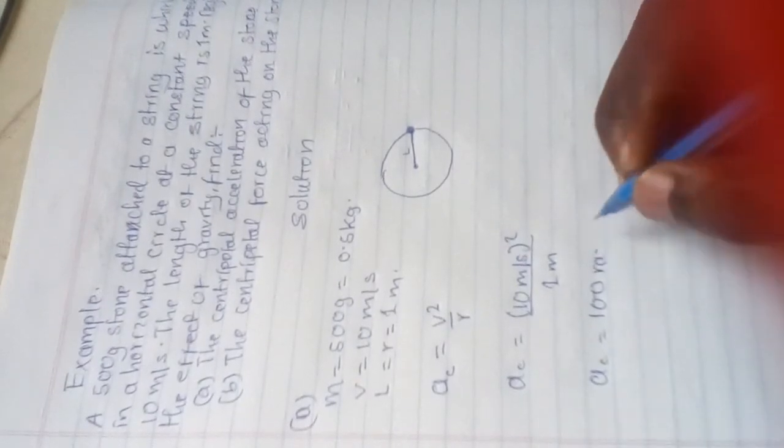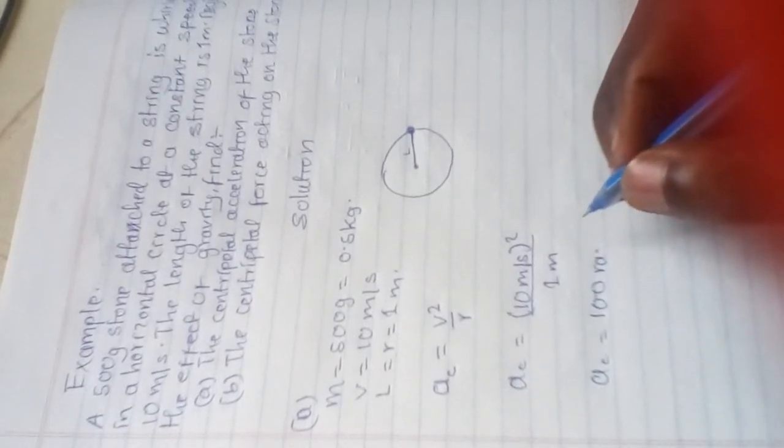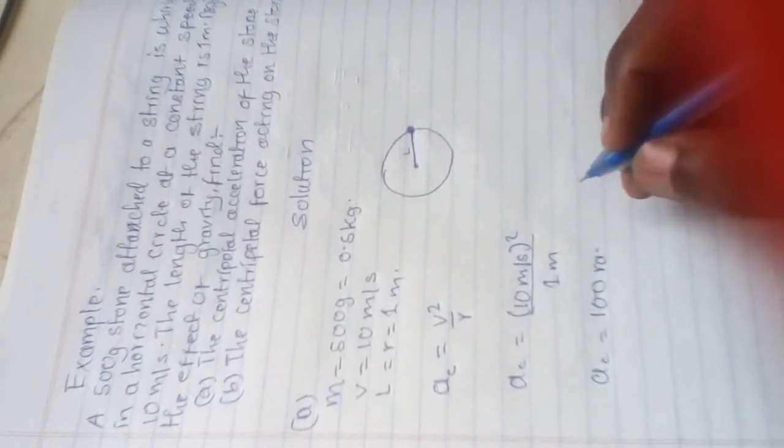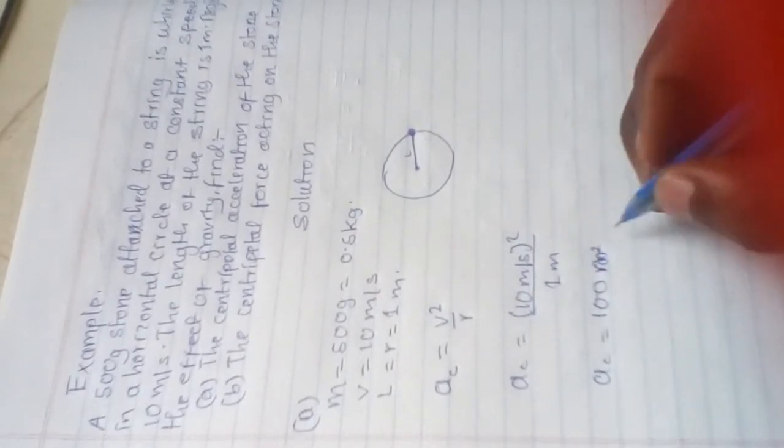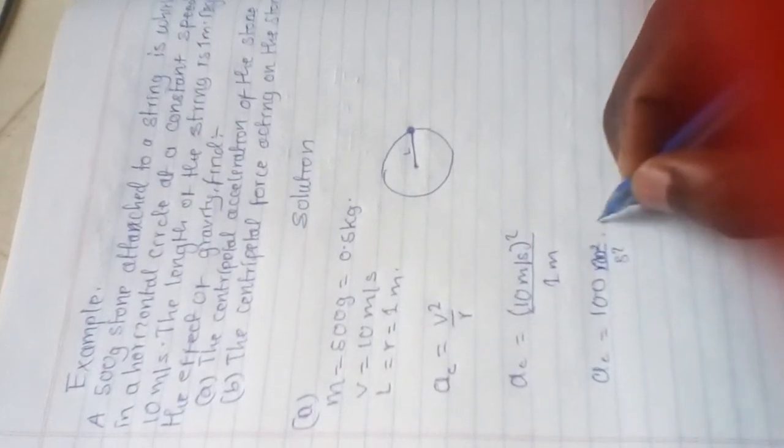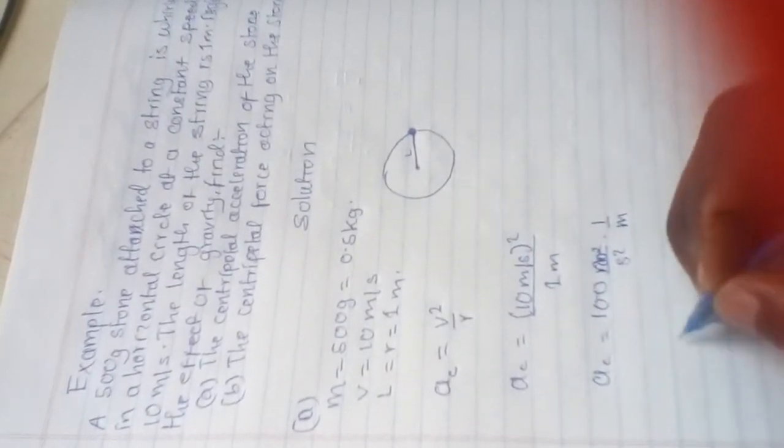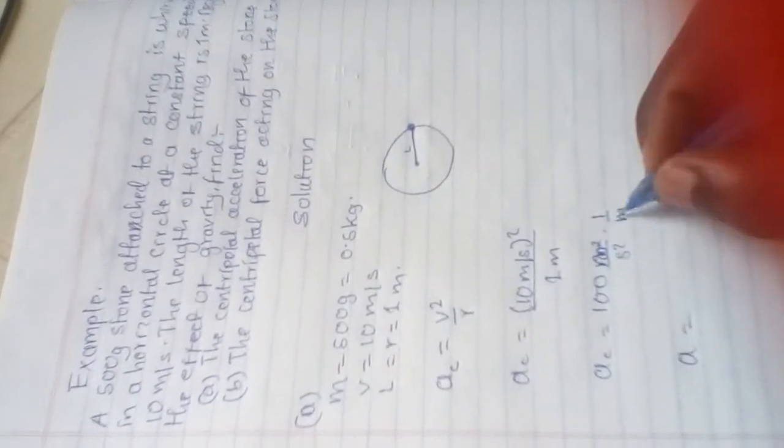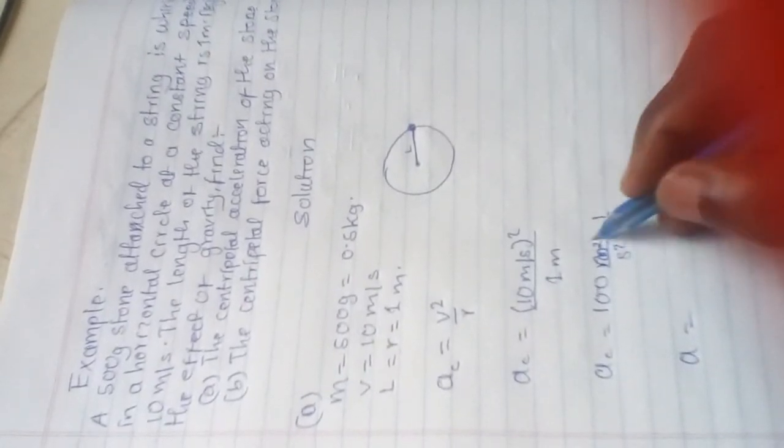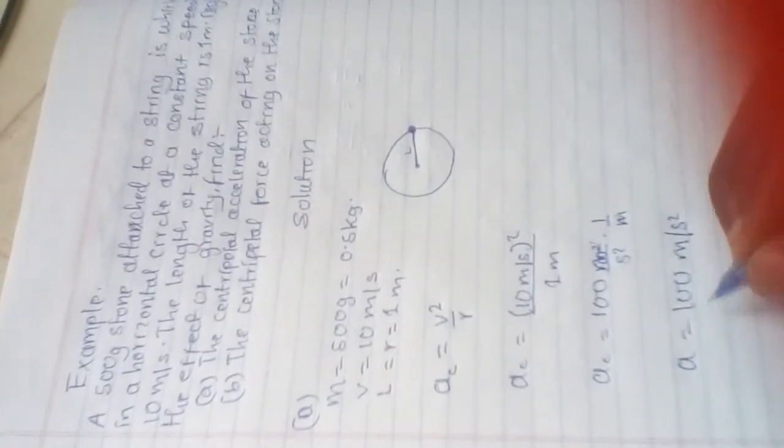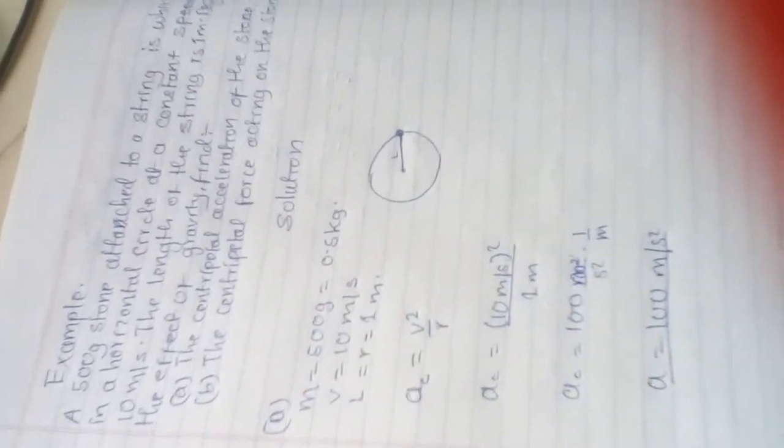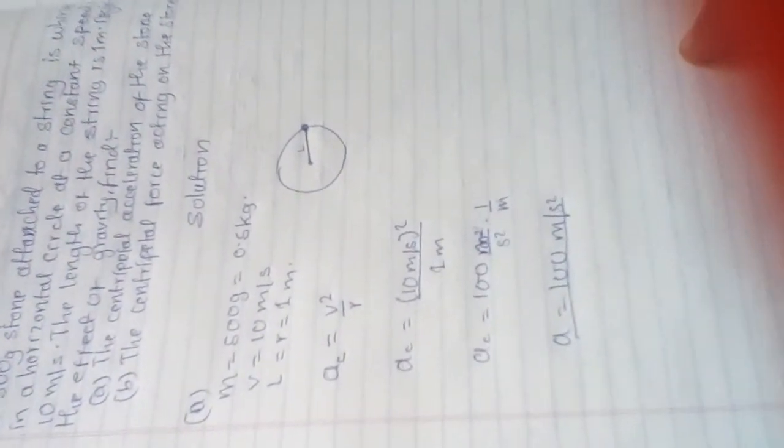The units are radians per second squared. For centripetal acceleration, we can also express this as meters per second squared. The unit works out to be meter per second squared, which is the standard unit for acceleration. That is the first part, finding the centripetal acceleration.